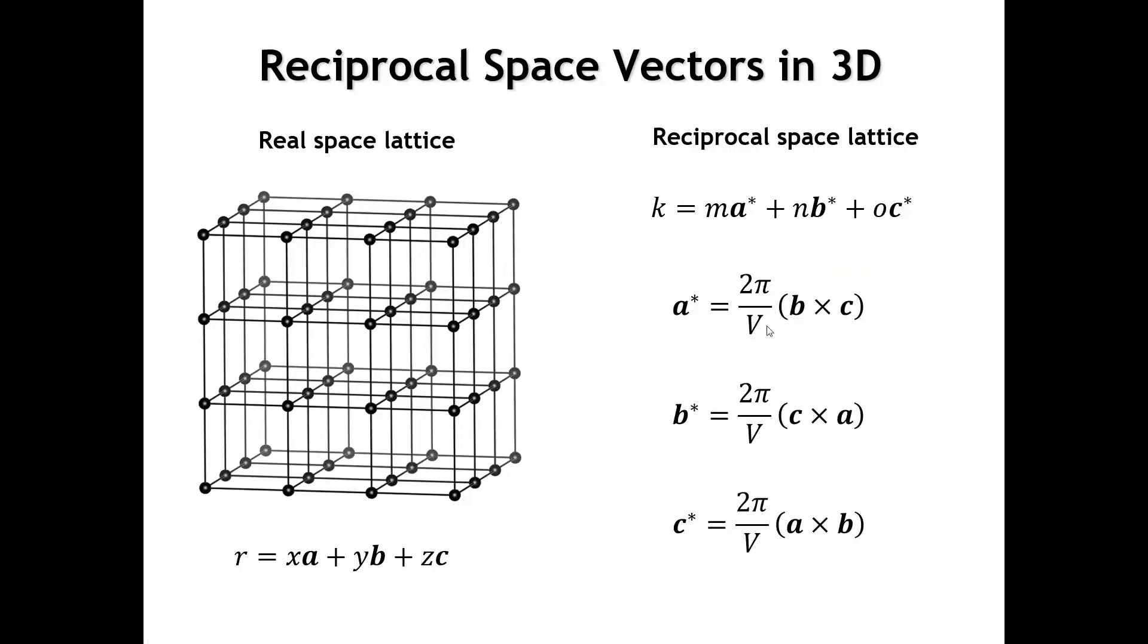We have similar relationships for b* and c*. You can see that if our real space lattice contains orthogonal lattice vectors, then the reciprocal space lattice is also going to contain orthogonal lattice vectors that have the same direction. We're not going to concern ourselves too much with deriving these reciprocal space lattice vectors, but it's good to know where they come from.